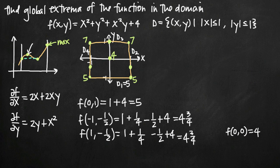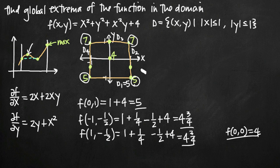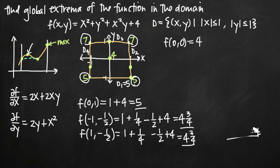Here's how we put all this information together. We have the interior critical point, three critical points along the edges, and four values at the corners. Our values are: 4 at (0,0), four and three-quarters at (±1, -1/2), 5 at (0,1) and (±1, -1), and 7 at (±1, 1). Our smallest value is 4, so f(0, 0) is equal to 4 and that's our smallest value.